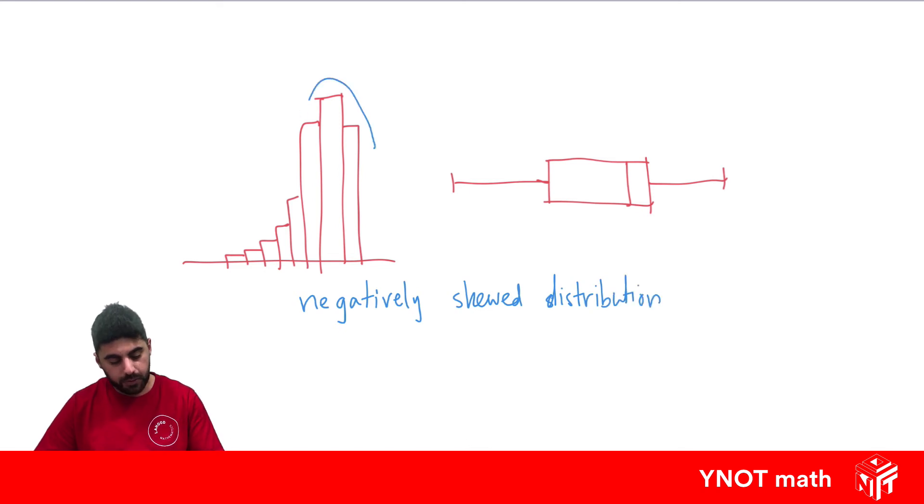Also, if we draw a pattern around the data, you can see the tail of the data is towards the negative side of our axis.